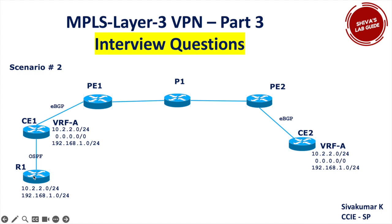CE1 is connected to R1. Between CE1 and R1 (a local router), R1 only has 10.2.2.0/24 and 192.168.1.0/24. Basically in R1 I don't see the default route entry. The question is: why is R1 not receiving that default route? CE2 is advertising it, PE1 receives it, CE1 receives it — but R1 doesn't see it.